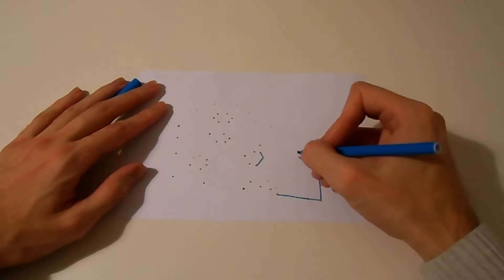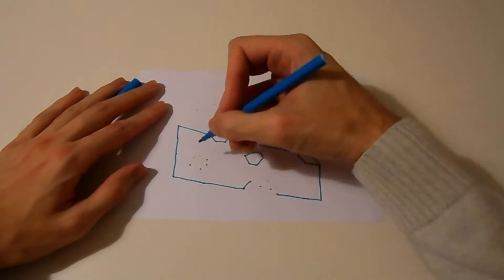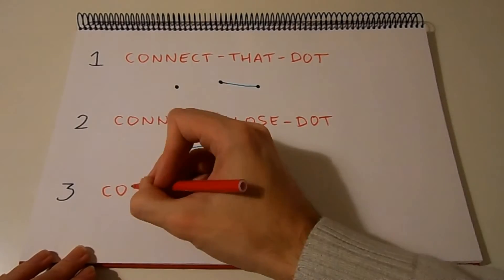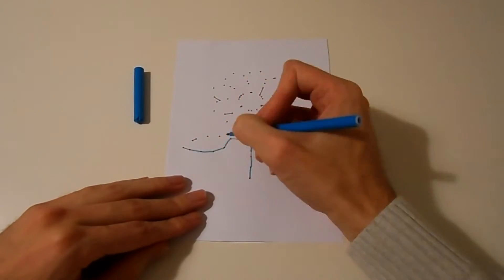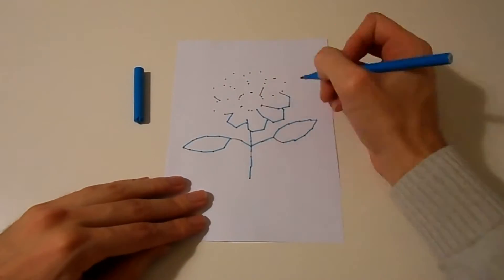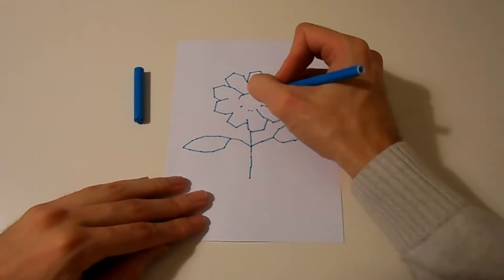Now that way we cannot really make interesting drawings, but if we use dots in a few different colors then we can. Or instead of connecting dots to their closest neighbors, we could also use a fixed distance to indicate which dots should be connected. If we connect all dots that are a distance exactly one from each other, we can still make nice drawings, even without using colors.